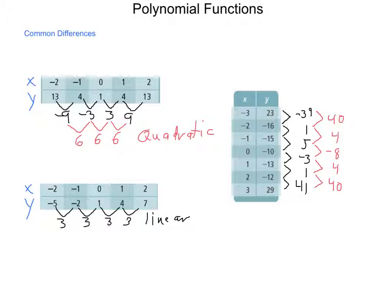Follows a pattern but is not the same numbers, so let's go again. How far is it from 40 to 4? That's -36. From 4 to -8 is -12. From -8 to +4 is a +12. From 4 to 40 is 36. Again it's following a pattern but it's still not the same thing. So from -36 to -12 is 24, from -12 to +12 is 24, and from +12 to +36 is 24.